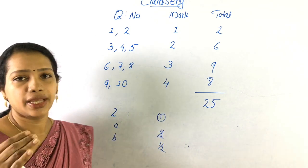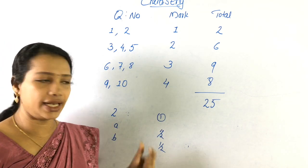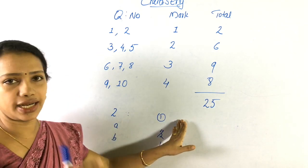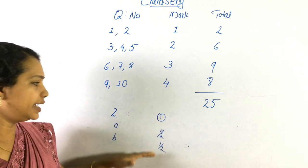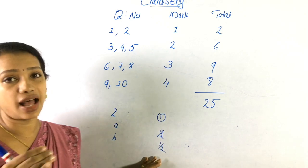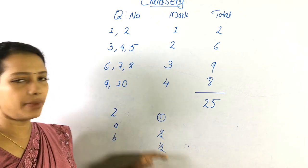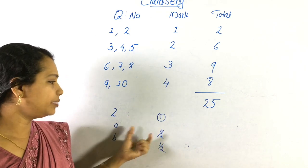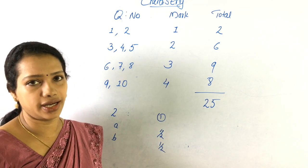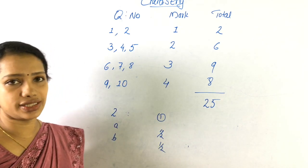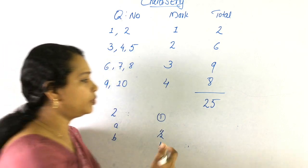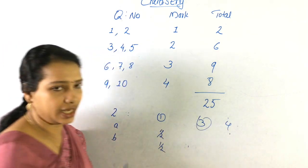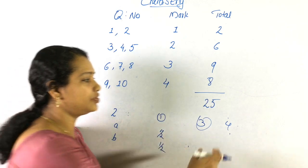Each question has 2 parts: a and b. The 2 questions are divided, and half of them count. For the 4-mark questions, each has 4 subdivisions, and you answer from those subdivisions.